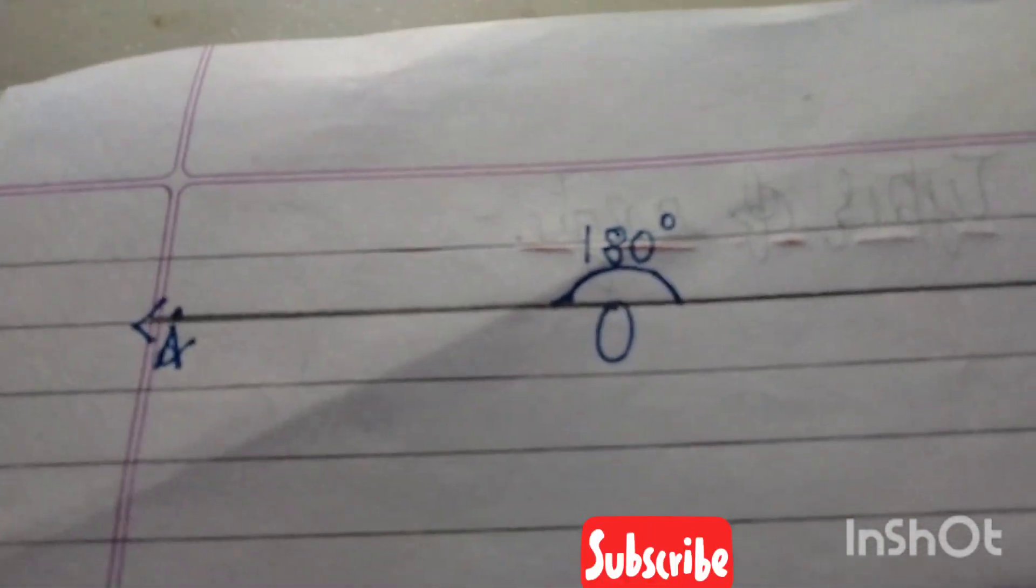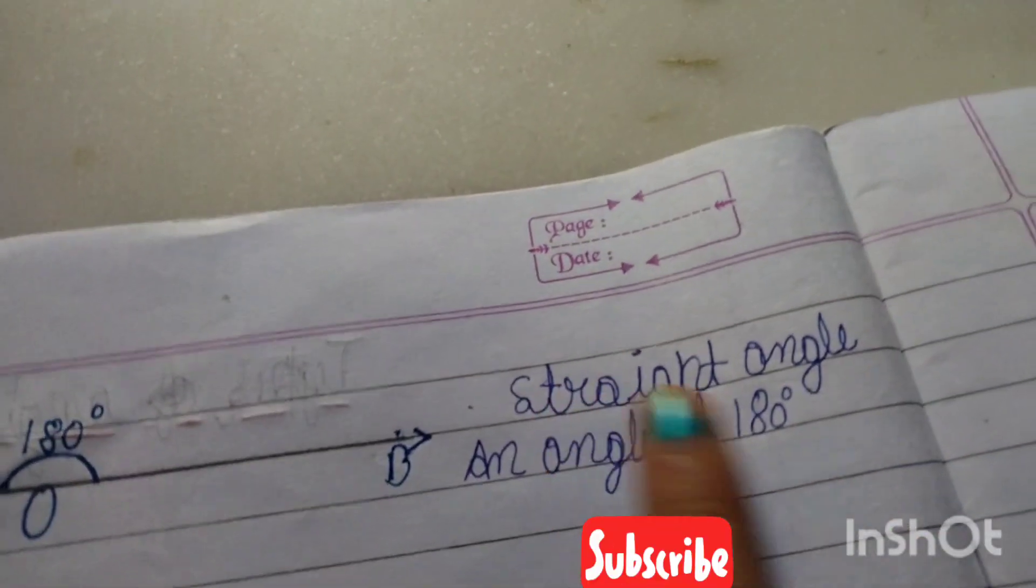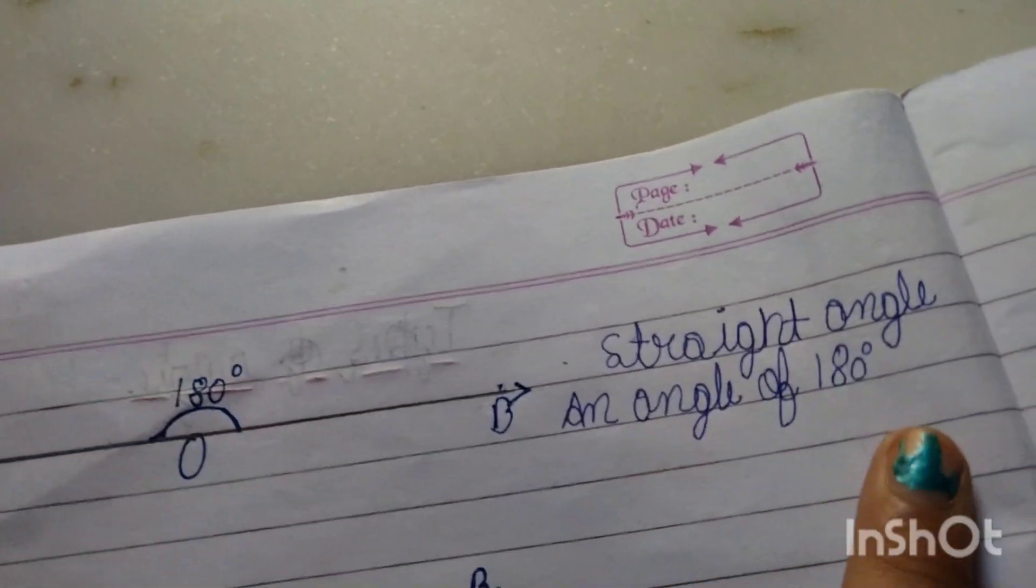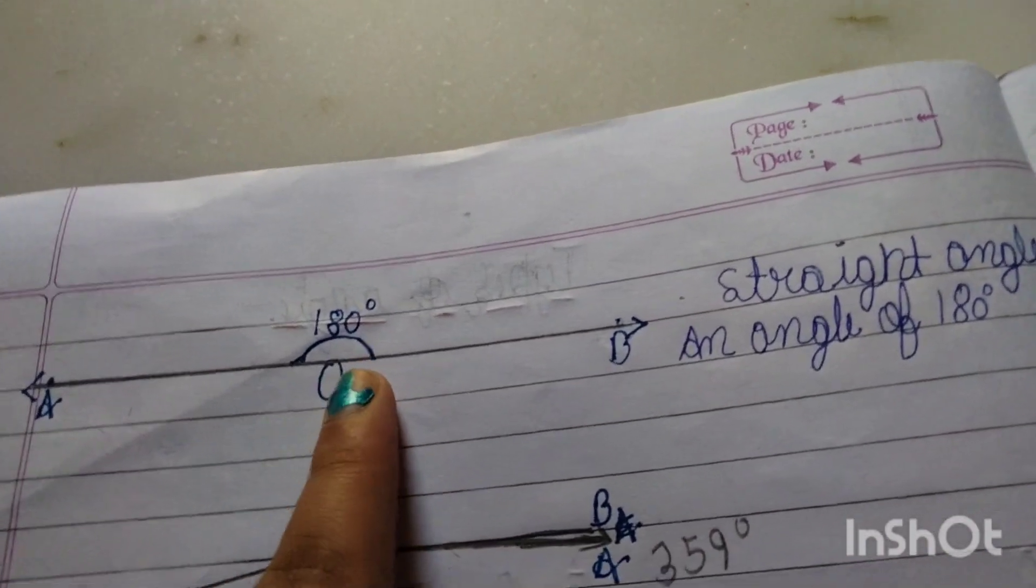Straight Angle: An angle of 180 degrees, a full straight line.